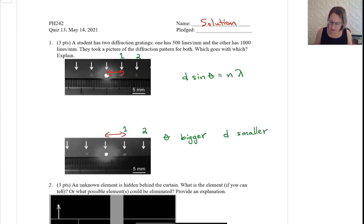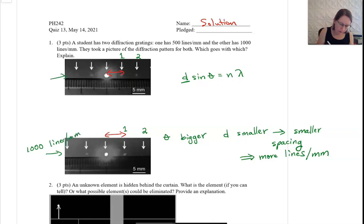And so that means if we have a smaller D, that means smaller spacing. So that means more lines per millimeter. So that means this one is the 1,000 lines per millimeter and this one is the 500 lines per millimeter.